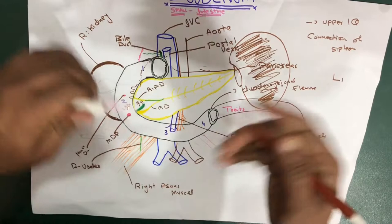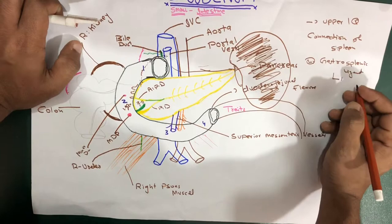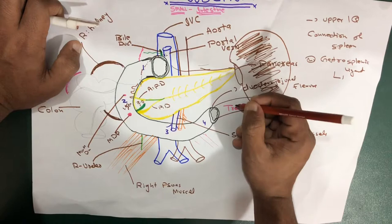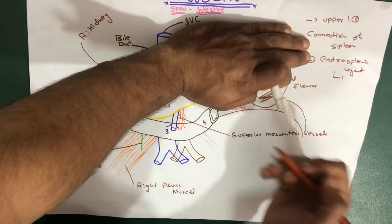The first ligament is the gastrosplenic ligament — 'gastro' meaning stomach, 'splenic' meaning spleen — which is actually a part of your greater omentum. It is a double-fold membrane coming from the peritoneum. Anteriorly, it is connected to the splenic hilum and to the greater curvature of the stomach. So the gastrosplenic ligament connects the stomach and the spleen.